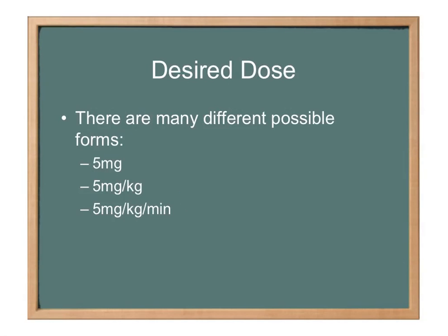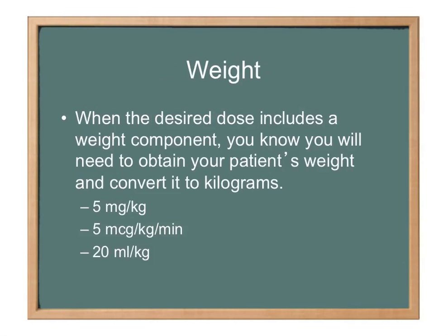5 mg is going to be really easy to calculate. 5 mg per kg is a weight-based dose, so that's going to be basically your dose times the patient's weight in kg. And then 5 mg per kg per minute is a weight-based drip, or infusion. When the desired dose includes a weight component, you know you're going to have to obtain the patient's weight and convert it to kg.